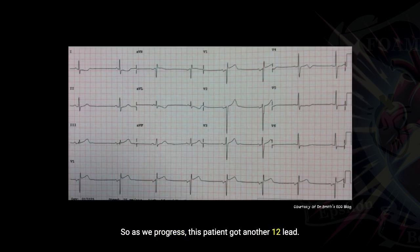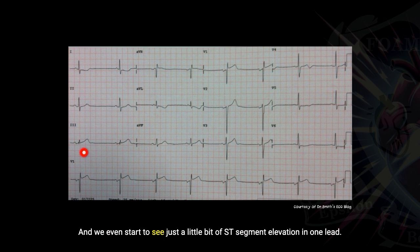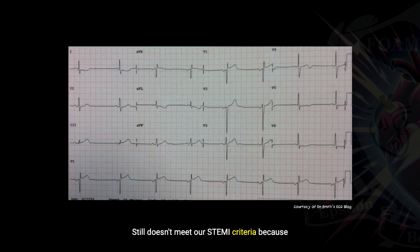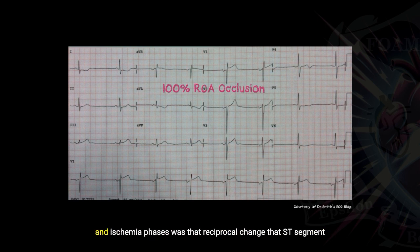As we progress, this patient got another 12-lead, I believe it was maybe 30, 45 minutes after. You can see there's now worsening ST segment depressions in the reciprocal leads, T wave inversions in lead 1 and AVL. We even start to see just a little bit of ST segment elevation in one lead — still doesn't meet our STEMI criteria because we need two or more contiguous leads. But this patient ended up going on and having a 100% RCA occlusion. The first things we saw at the very beginning of their injury and ischemia phases was that reciprocal change — that ST segment depression and T wave inversion in lead 1 and AVL for the inferior MI.